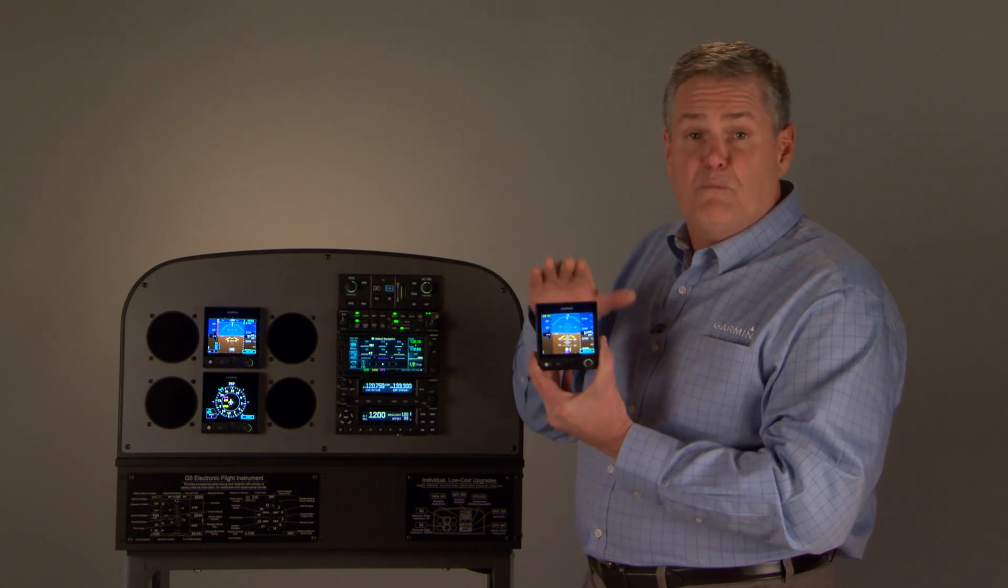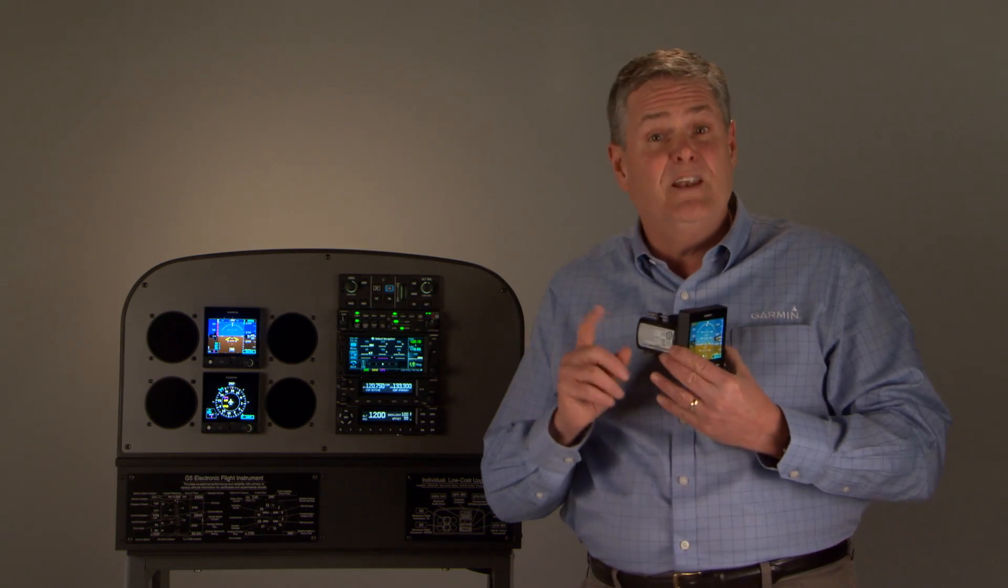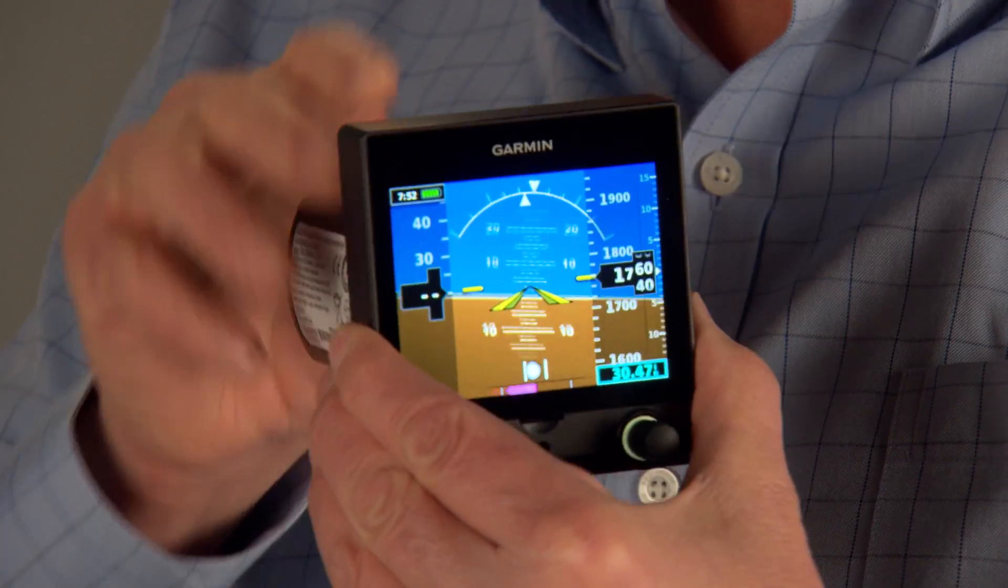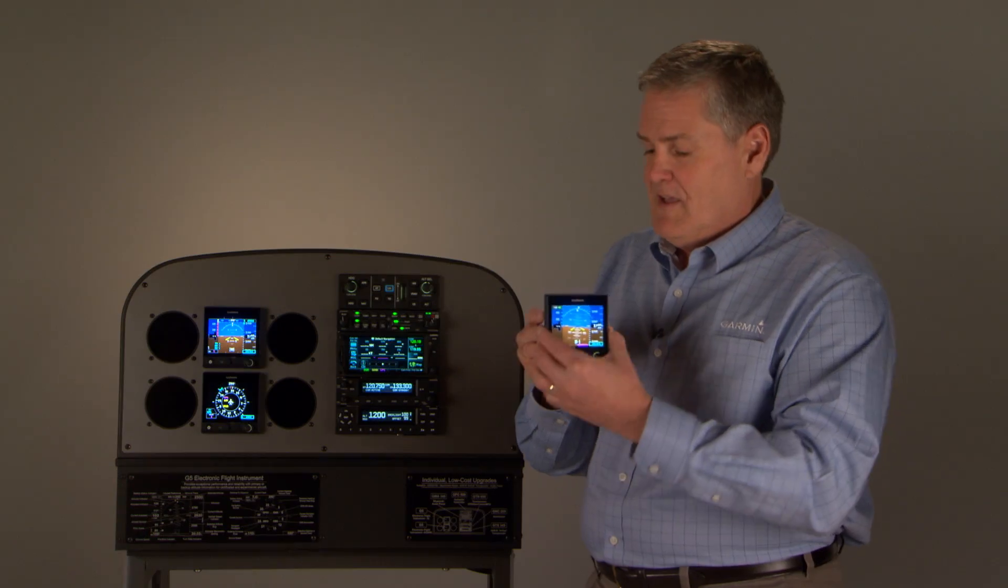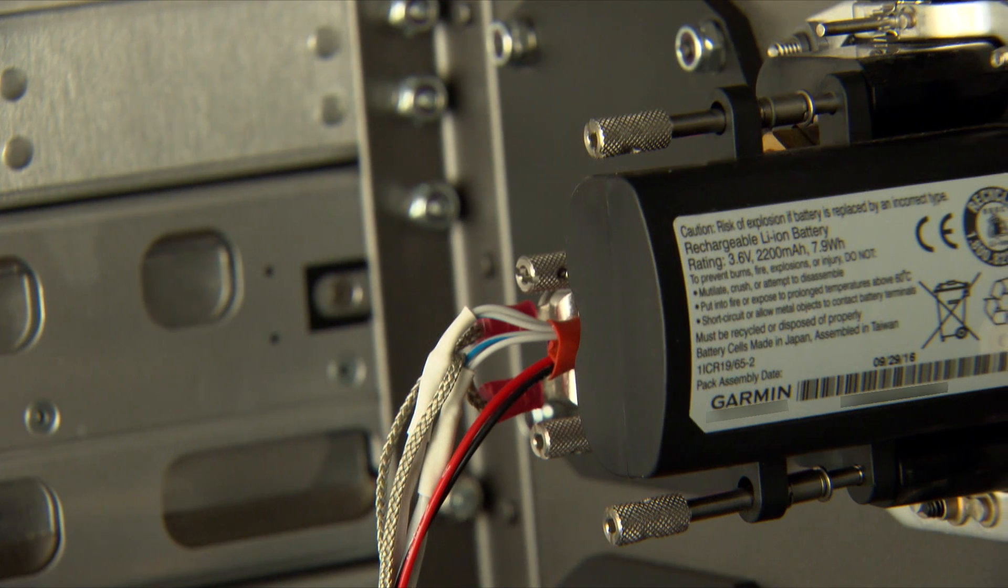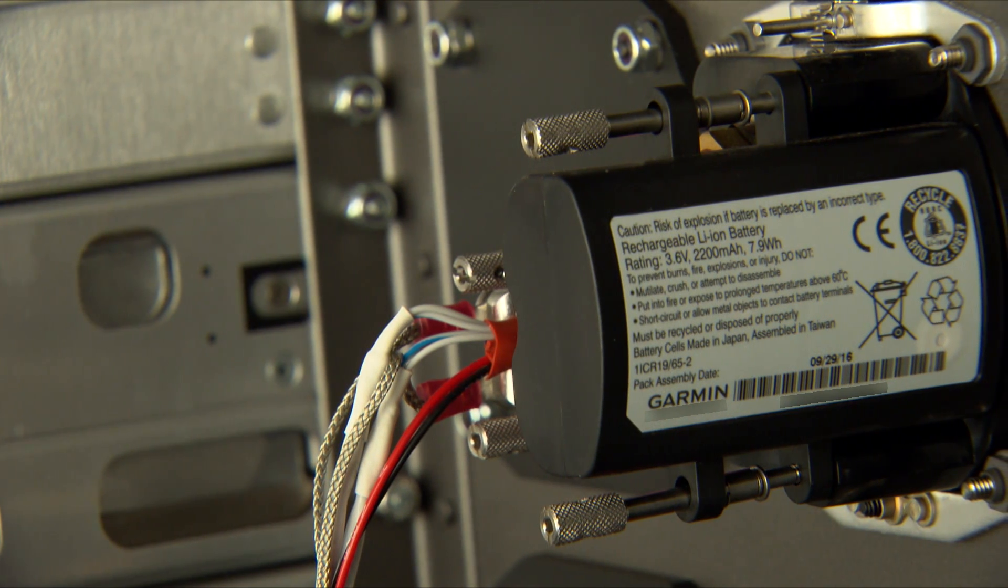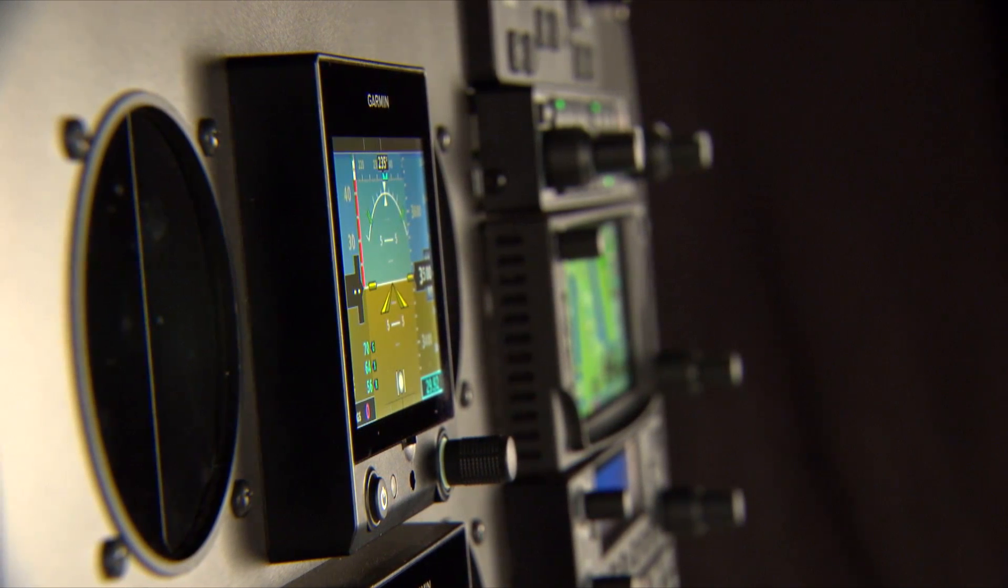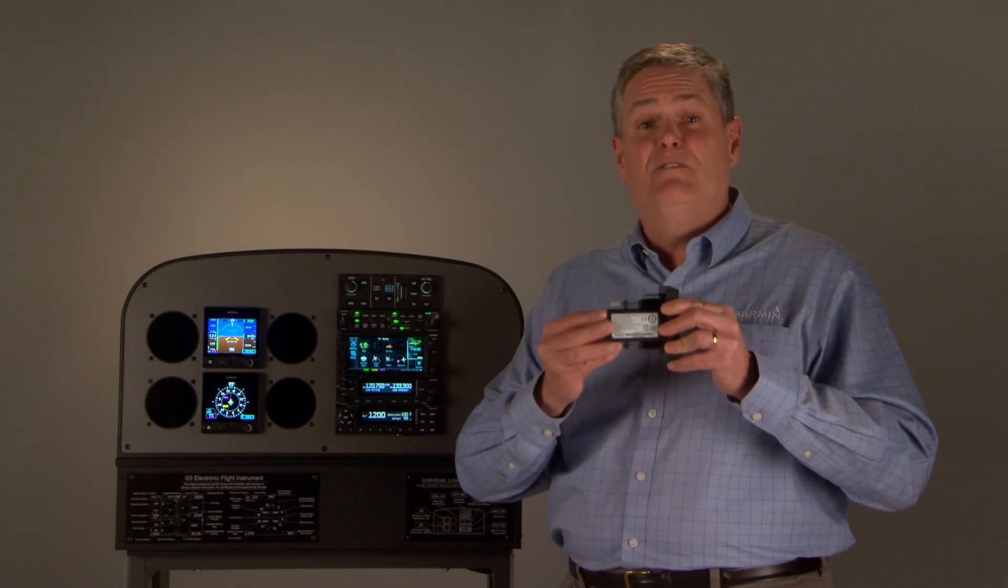Let's look at the attitude indicator. This can be your primary attitude indicator, and it'll replace the existing one in the panel. A few of the advantages are that this no longer uses a vacuum system. This is all solid state, self-contained AHRS system, attitude heading reference system. It also comes with a backup battery that'll give you about four hours of battery life. That's probably more fuel than you actually have in your airplane. So this thing could keep on going if you had a total electrical failure. The nice thing with the G5 is that it actually fits an existing three and one-eighth inch round cutout, so you don't have to modify your existing panel, although we do have a flush mount option.